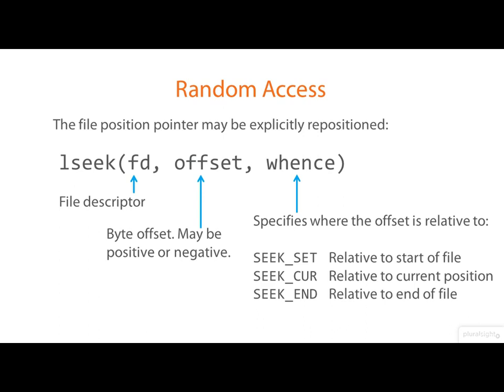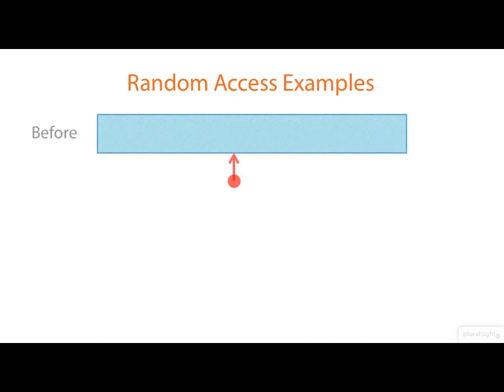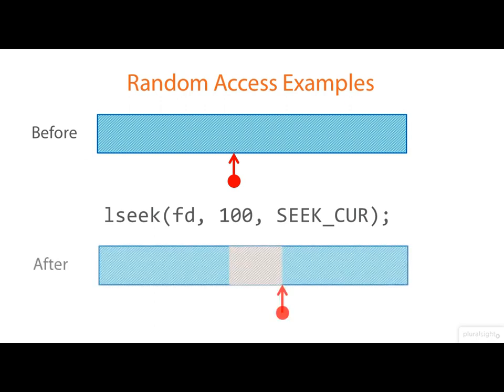Let's have a look at some examples. Here we're seeking 100 bytes forward relative to the current position, and the file position pointer ends up like this.